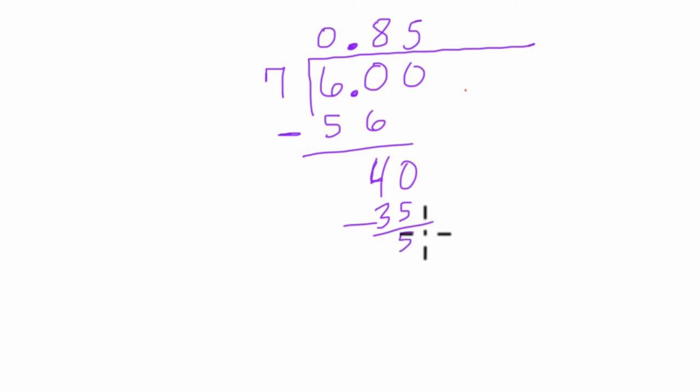Well, seven goes into 5, think of it as 50. Add another zero. And it goes into it seven times because seven times 7 is 49. We subtract here. 50 minus 49 is 1. Does seven go into 1? We can think of it going to 10. Seven goes into 10 one time. And 10 minus 7 is 3.